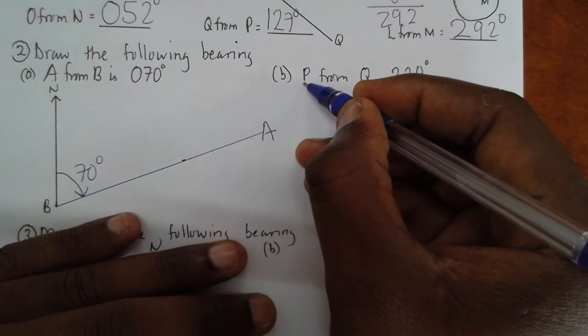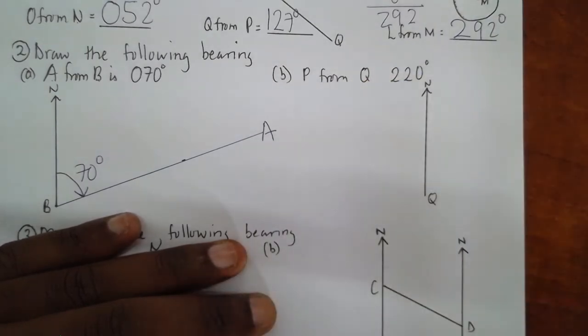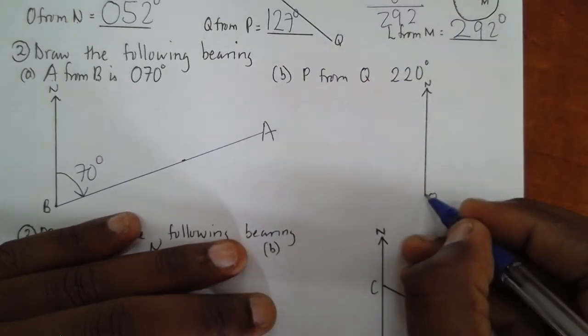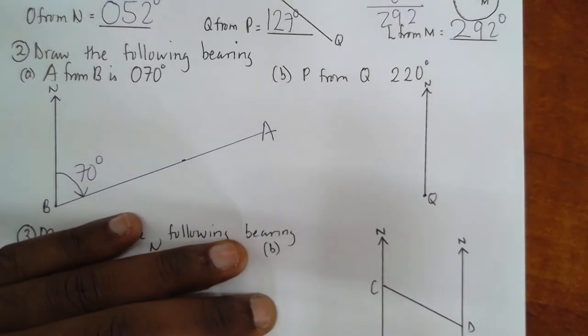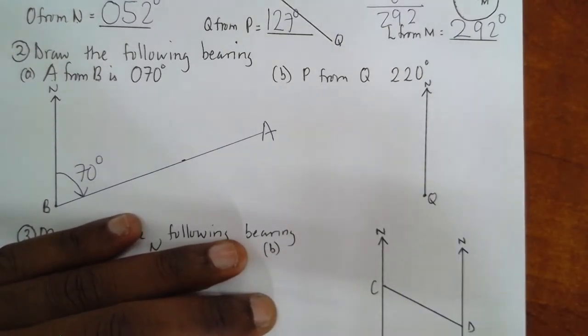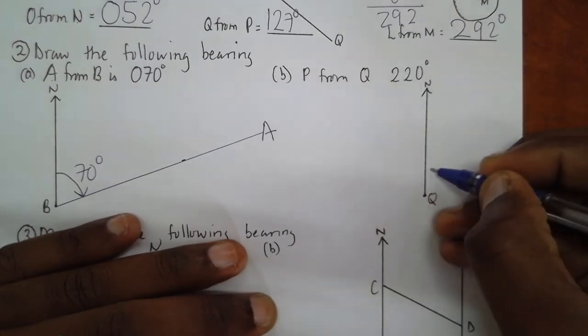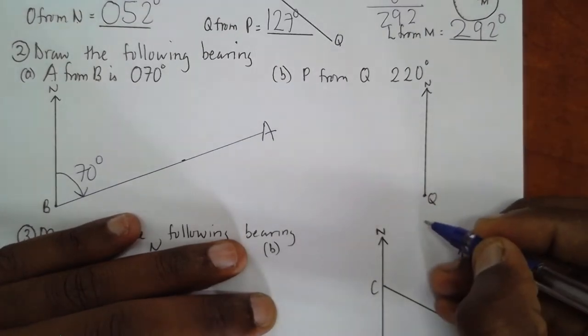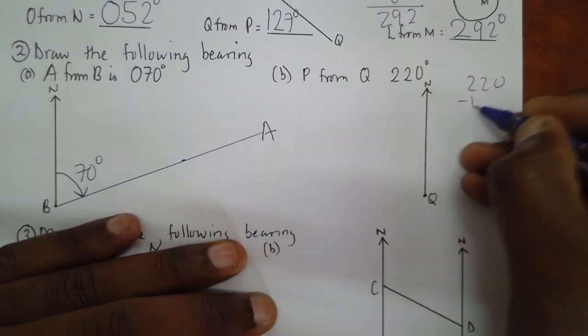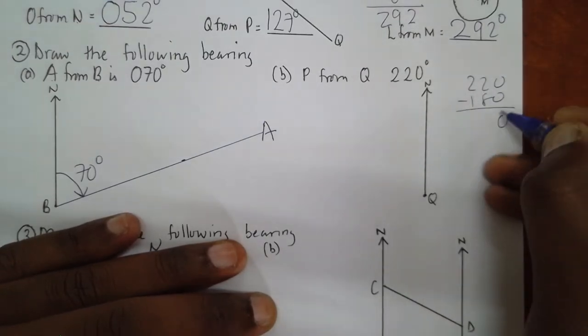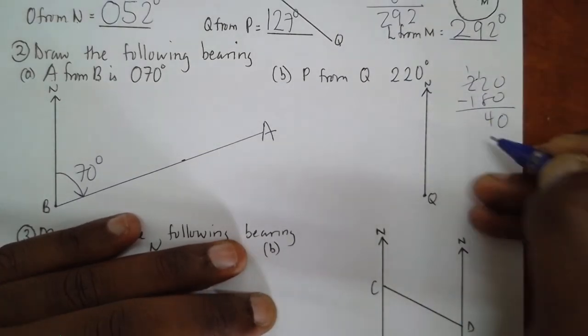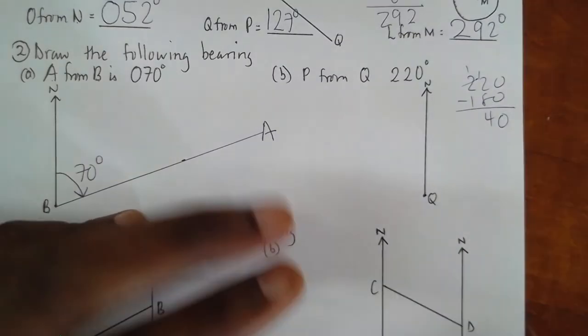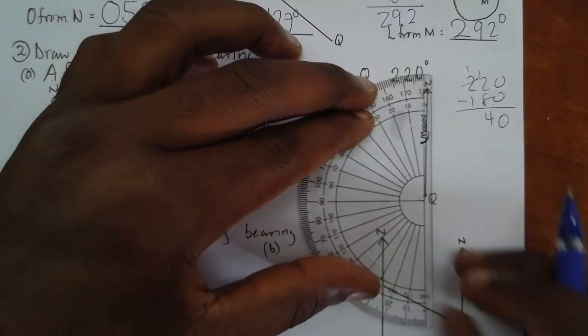But B, B from Q, 220. Remember, 220 is more than 180. I can do two things. I know from here till down is 180. Then something has to be added on. So, if I get 220 minus 180, I will notice that I need to add 40. So, if I need to add 40, I can just put my protractor this side, here, and I ensure that the top part is clear on the line.